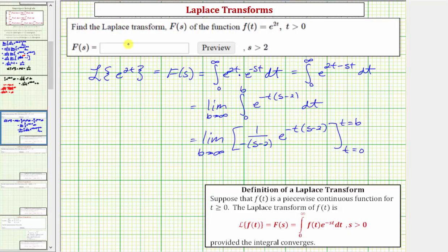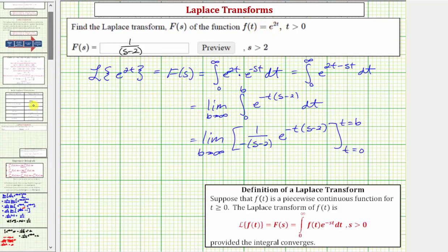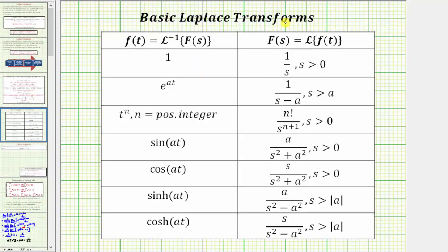Going back to our first slide, big F of s equals one divided by the quantity s minus two — be sure to put parentheses around s minus two when entering this. We can also verify using a table of Laplace transforms: if f of t equals e raised to the power of a t, then big F of s equals one divided by the quantity s minus a. In our case a equals two, confirming our result of one divided by the quantity s minus two, where s is greater than two.